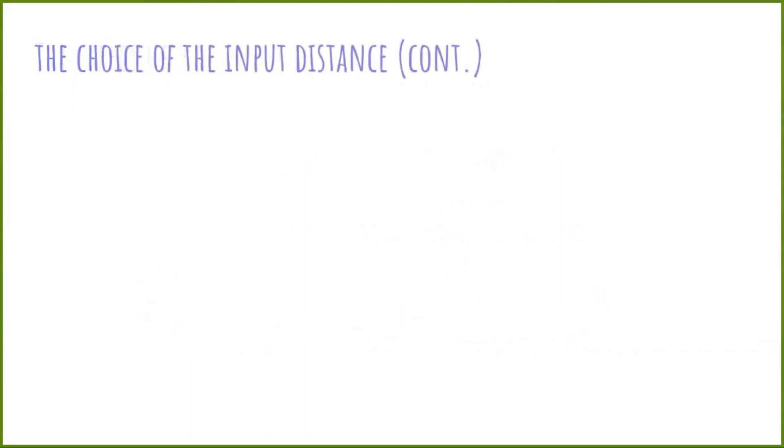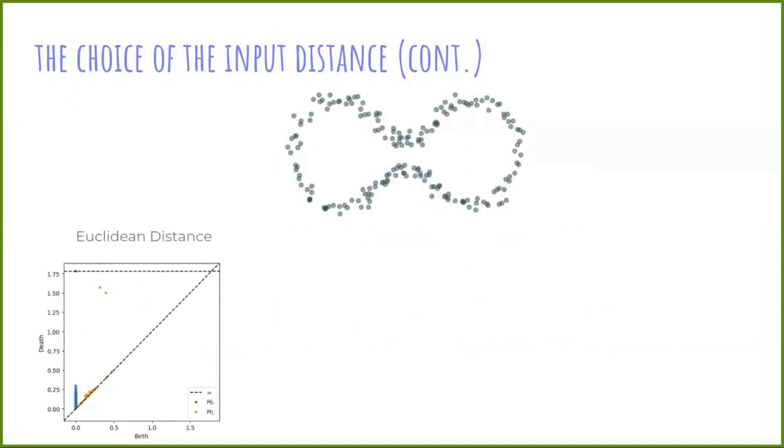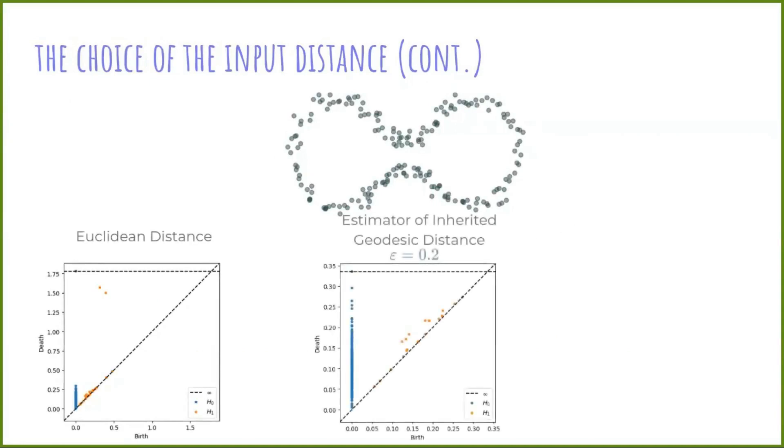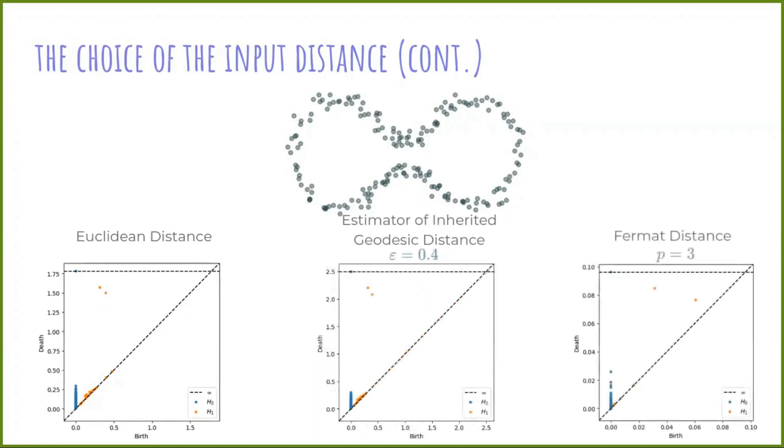For a last time, I promise, come back to our noisy sample of the glasses. Let's review the persistence diagrams that we obtain using Euclidean distance or the estimator of the geodesic distance for different values of epsilon. And now, compute the persistence diagram using Fermat distance for different values of p.